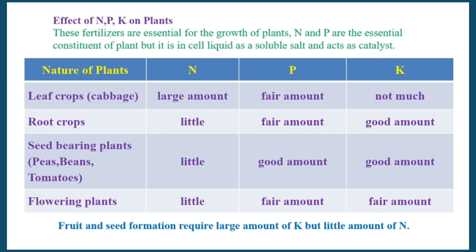For fruit crops: nitrogen — little, potassium — not much. For seed-bearing plants: nitrogen — little, potassium — not much.